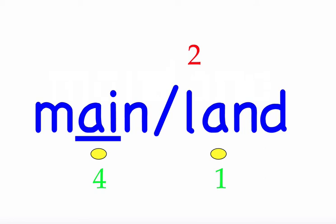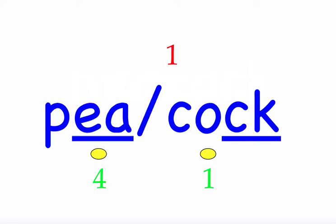The next word is 'peacock.' They have a beautiful peacock in their front yard. First syllable 'pea' — two sounds, P-E-A. Second syllable 'cock' — three sounds, C-O-C-K. Mark the word. Peacock.